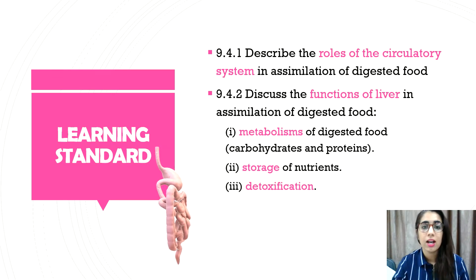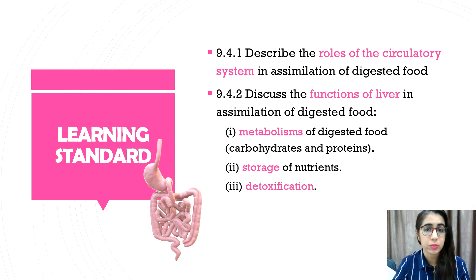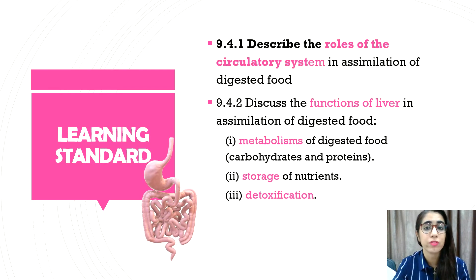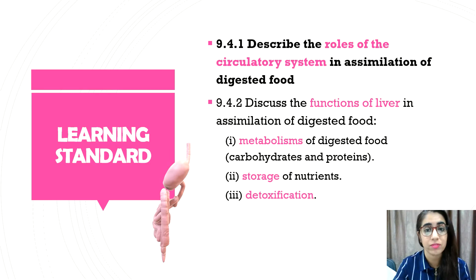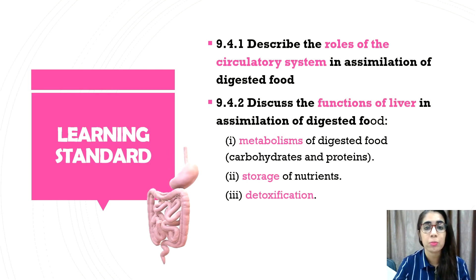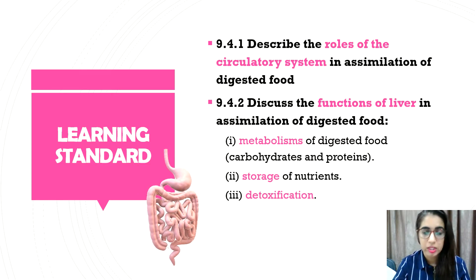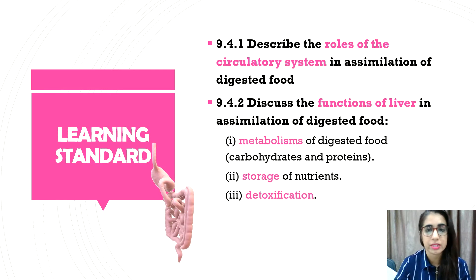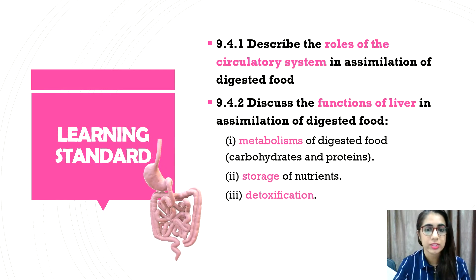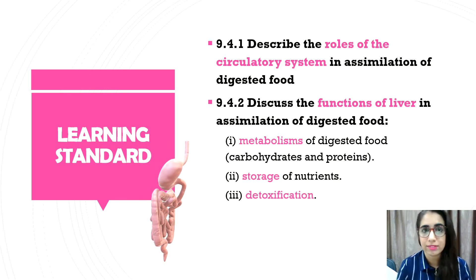We have to know the learning standard. The learning standard for this subtopic is 9.4.1, where you have to describe the roles of the circulatory system in assimilation of digested food. And 9.4.2, where you have to discuss the functions of the liver in assimilation of digested food, including metabolism of carbohydrates and protein, the storage of nutrients, and also detoxification.